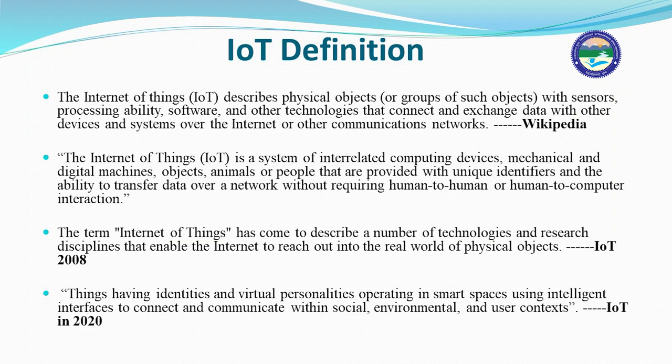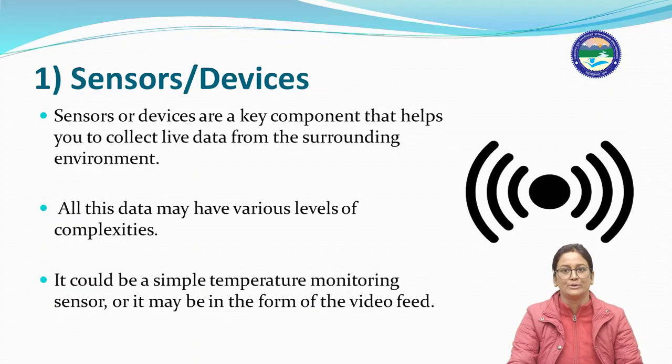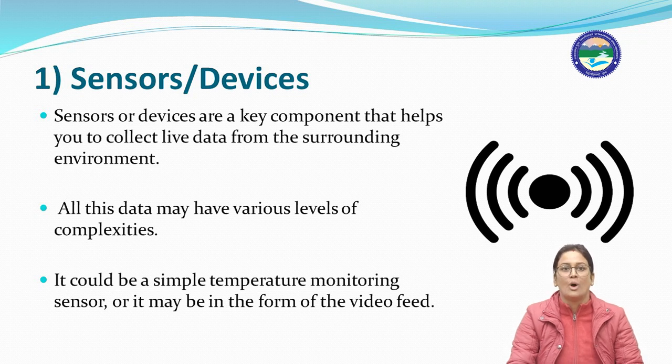How IoT works — four phases describe the working of IoT: first, sensors or devices; second, connectivity; third, data processing; fourth, user interface. Sensors or devices are a key component that help collect live data from the surrounding environment. The purpose of sensors in IoT is to collect live data from the surrounding environment.